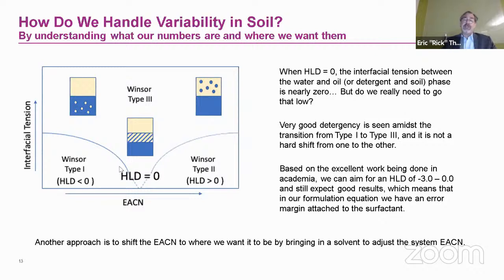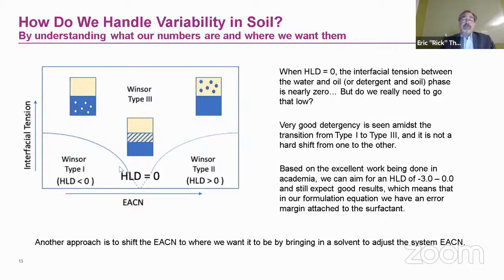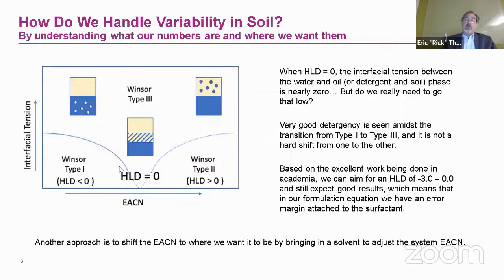If we're not 100% sure of the EACN, we can bring in a solvent of a known EACN to try to overwhelm the soil and bring its effective EACN closer to where we want it. That's a technique I won't go into today due to time. Instead, we'll focus on that margin of error I mentioned.